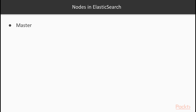Master eligible nodes are the nodes that, for all intents and purposes, keep Elasticsearch going. Master nodes control the cluster. There are also data nodes, which hold data, facilitate search operations, aggregations, and everything you do when interfacing with data, such as CRUD operations.